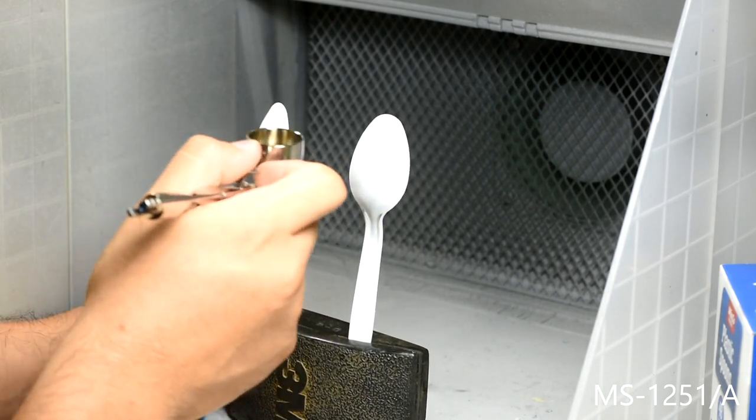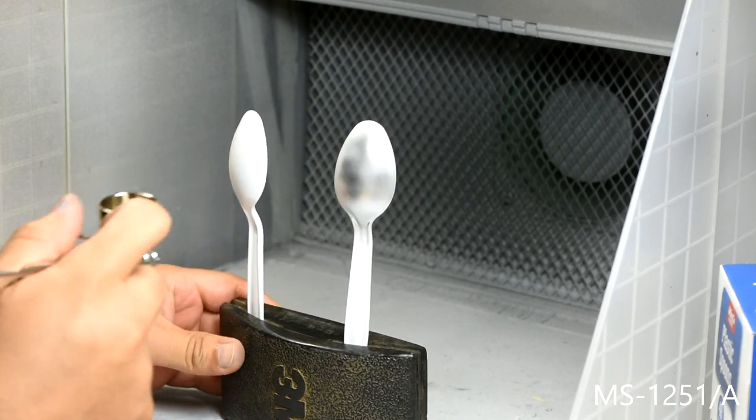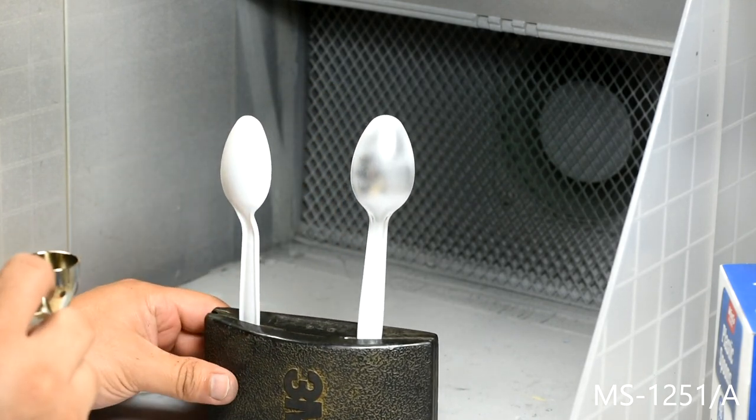With the spoon on the right I want to show what to avoid when spraying. Avoid spraying in bursts directly over the surface. This will usually yield inconsistent layers of paint.